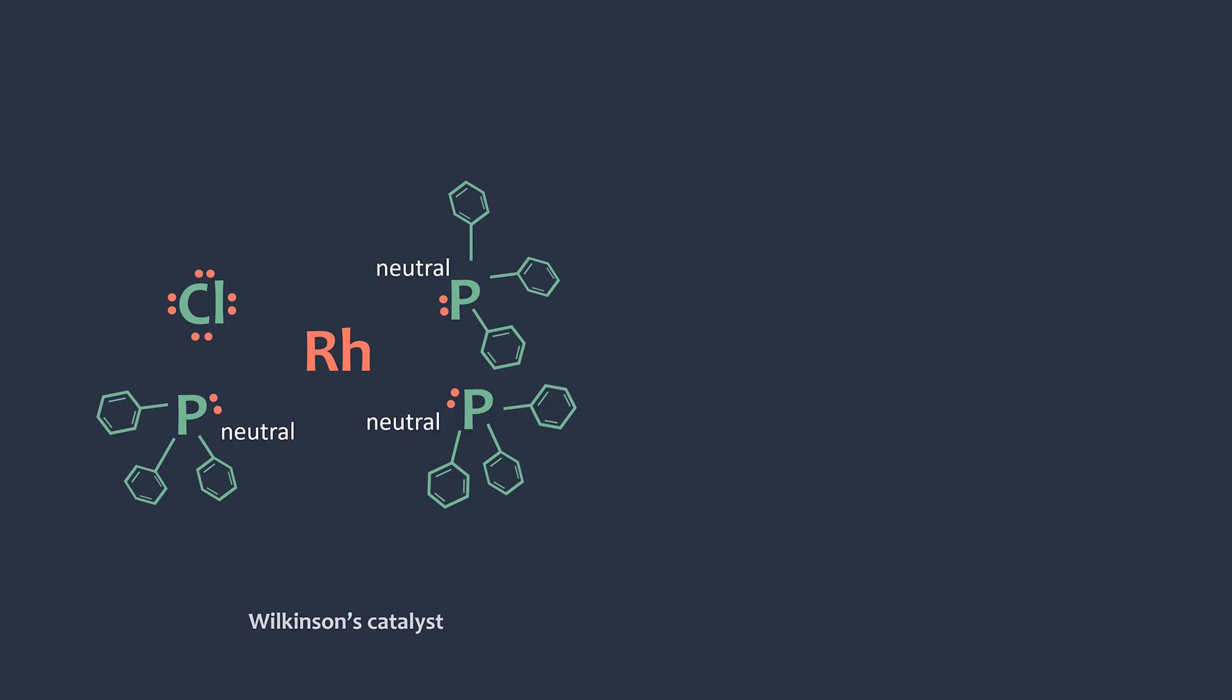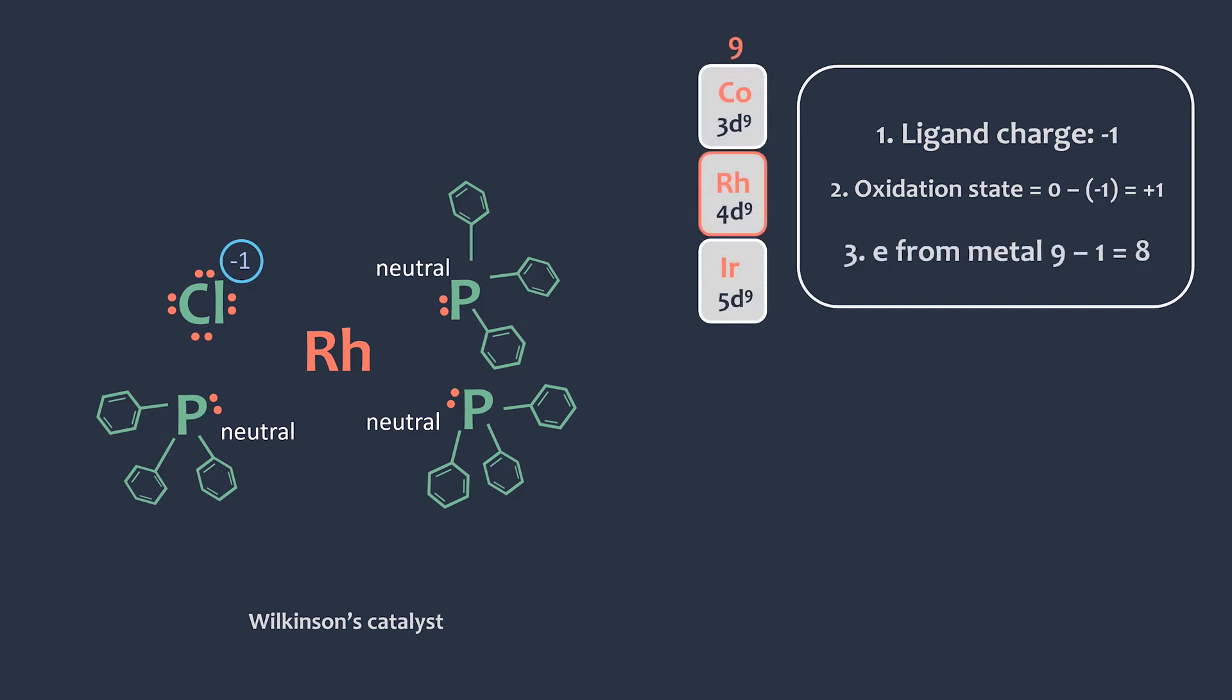From the formal charges, we know that the phosphine ligands are neutral and the chloride ligand has a negative charge. So, the total ligand charge is negative 1, which makes the oxidation state of rhodium plus 1. Since rhodium is in group 9 and has the oxidation state of plus 1, the electron from metal in this case is 8.